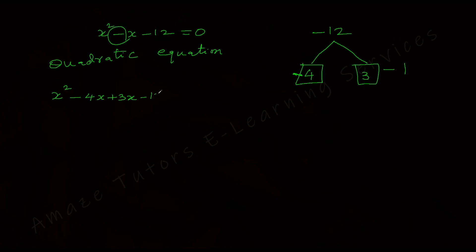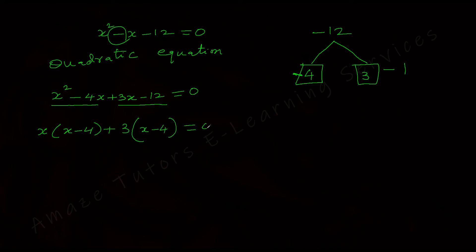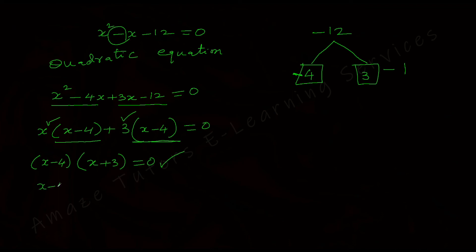Rewriting and splitting the middle term using the factors we found — then factoring by grouping: take the common factor x from the first two terms to get x times (x minus 4), plus 3 times (x minus 4) equals 0. Now (x minus 4) is common; taking it out gives (x minus 4)(x plus 3) equals 0. Using the zero product property: either x minus 4 equals 0, giving x equals positive 4, or x plus 3 equals 0, giving x equals negative 3.